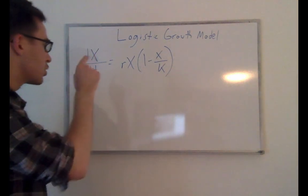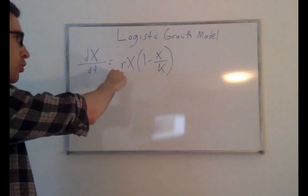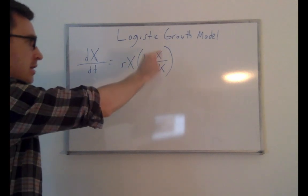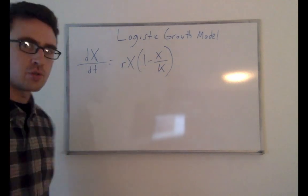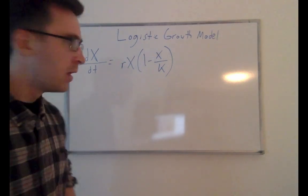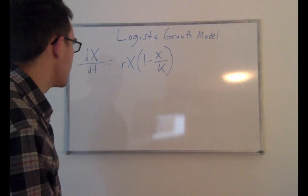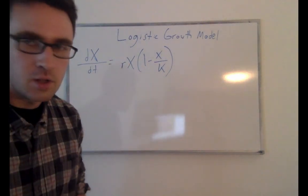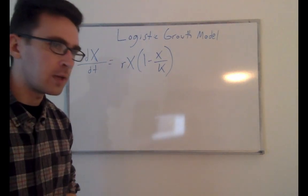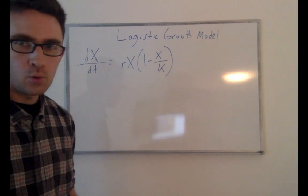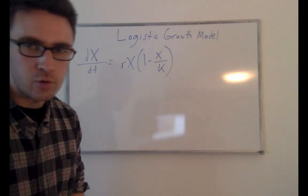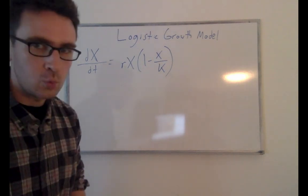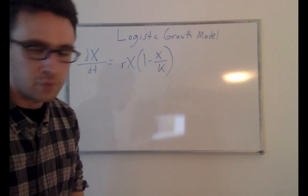The model has two parameters: a growth rate R and a carrying capacity K. We call our variable X, which could be the number of cells, people, animals, or whatever population you're trying to model. We'll just talk about cells for now.